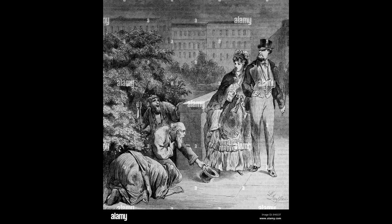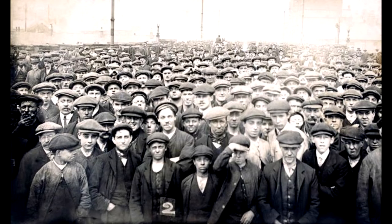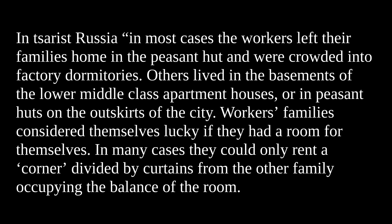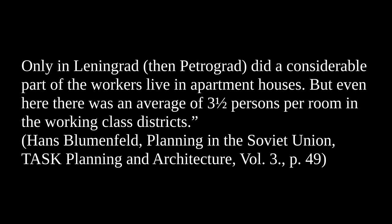So there was a huge homeless population who, during the night, either had absolutely no place to go or lived in temporary shelters. And there was also a massive population of the urban poor consisting of proletarians and other working people whose living conditions were practically just as bad, except that their housing was relatively more stable since they paid something for it. As Hans Blumenfeld, a German-Canadian architect, writes: in Tsarist Russia, "In most cases, the workers left their families home in the peasant hut and were crowded into factory dormitories. Others lived in the basements of lower middle-class apartment houses or in peasant huts on the outskirts of the city. Workers' families considered themselves lucky if they had a room for themselves. In many cases, they could only rent a corner divided by curtains from the other family occupying the balance of the room. Only in Leningrad — which was then called Petrograd — did a considerable part of the workers live in apartment houses. But even here, there was an average of 3.5 persons per room in the working-class districts."